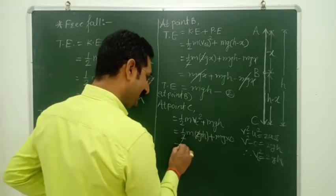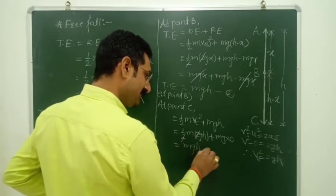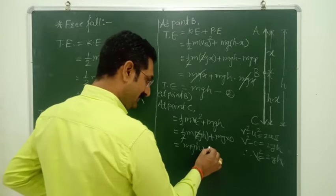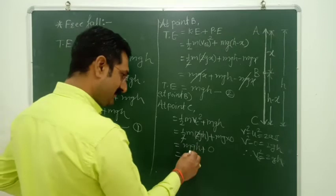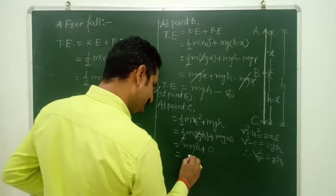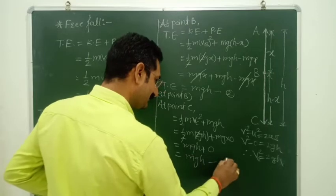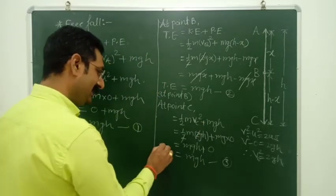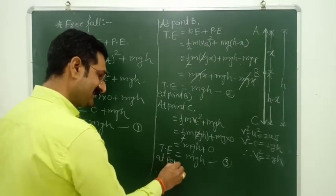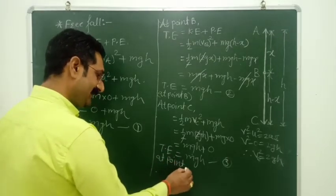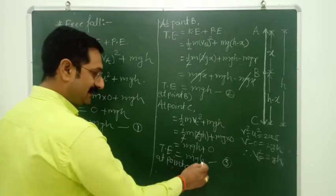So: 1 × m × gh = mgh, plus mgh × 0 = 0. Total energy at point C = mgh + 0 = mgh. So here we applied equation third and found that total energy at point C = mgh.